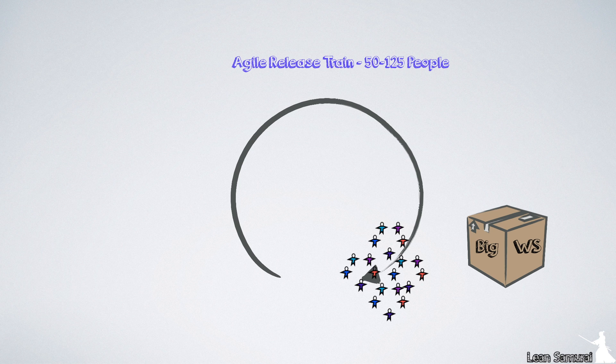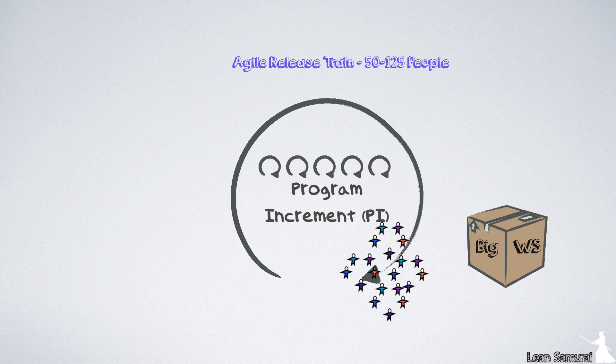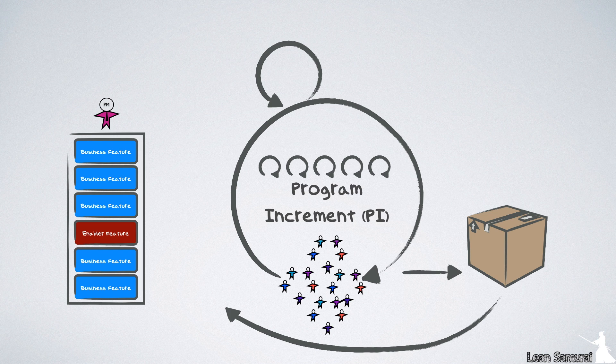It will also timebox its effort into program increments, or PIs, which are five iterations by default. The content for each PI is determined by a product manager in the program backlog in the form of features, and will provide most of the content for the team backlogs.